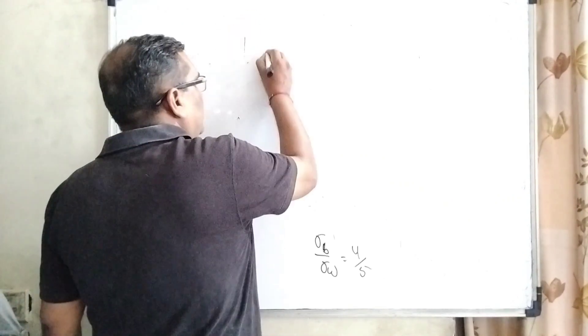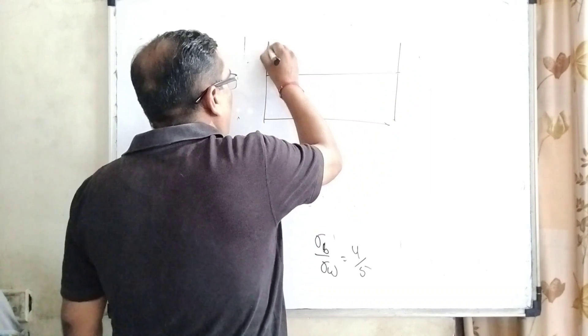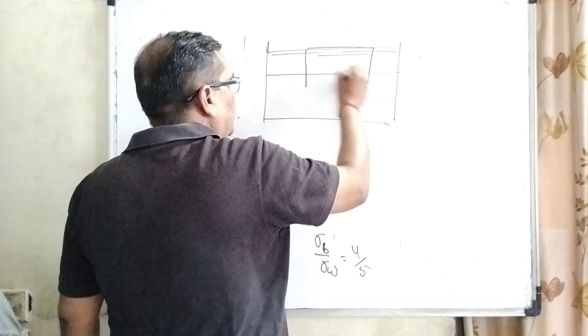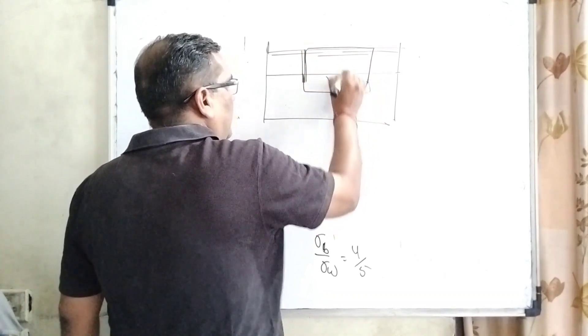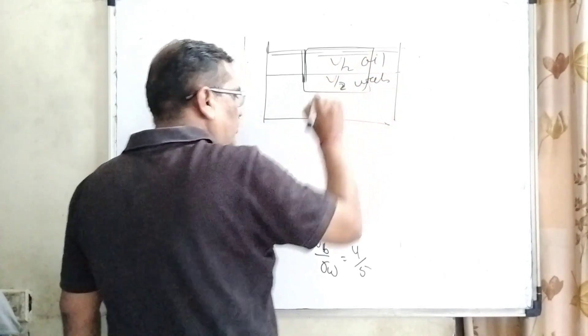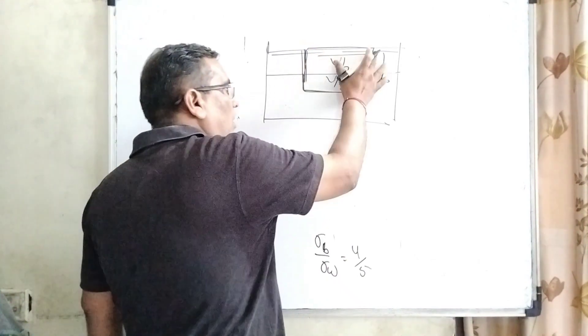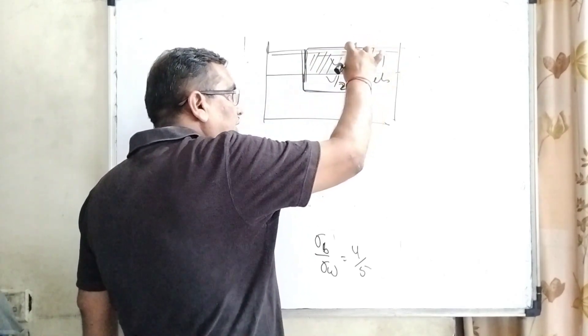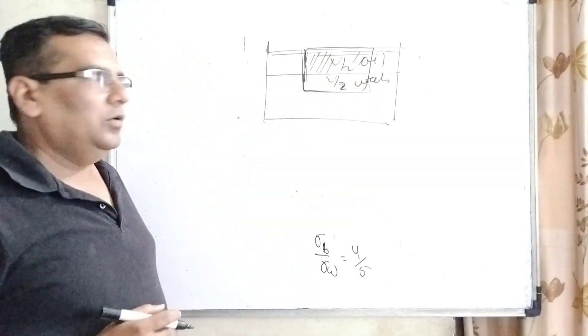Now for the second part, here it is given in the question, some oil is poured on this container and this block dipped such that half part in water and half part in oil. So therefore again we have applied Archimedes principle. Then weight of this total block is equal to weight of this block which is immersed in the oil and second weight of the block which is immersed in water.